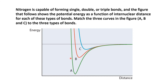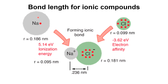We can interpret the graph using energy values: curve A has the maximum energy and curve C has the least. Since a triple bond requires the most energy to break, curve A corresponds to the triple bond, curve B to the double bond, and curve C to the single bond. This is confirmed by bond length: curve A has the shortest bond length and curve C the longest, consistent with single bonds having the greatest bond length.